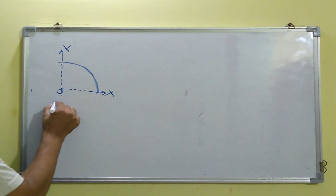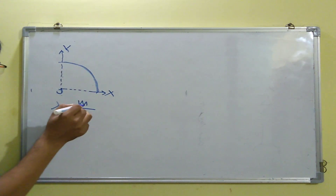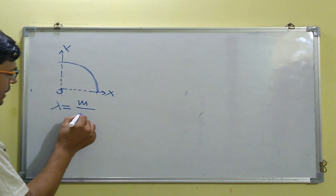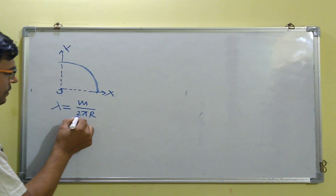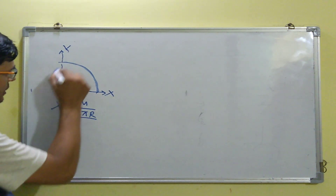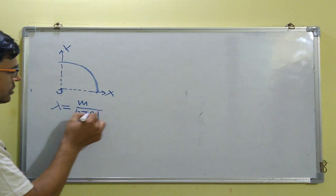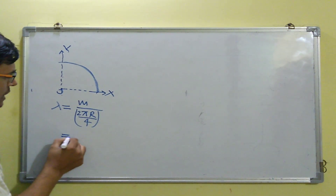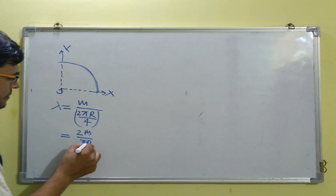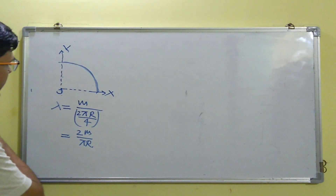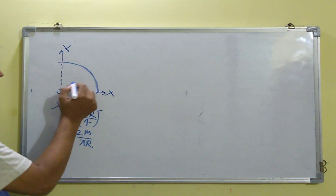We define the linear mass density lambda as the entire mass m of the ring divided by the total length. The total circumference is 2πr, and since it's a quarter circle we divide by 4, giving lambda = 2m / (πr).